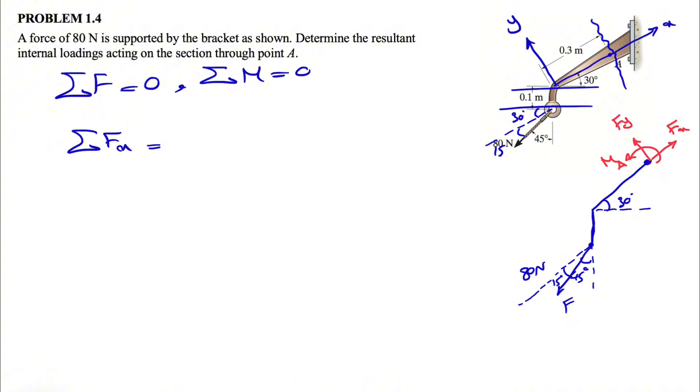If we want to find the X component of F, I'm going to show it in green. This would be the Y component. The X component would be F cosine of 15 degrees, and the Y component of F would be F sine of 15 degrees.